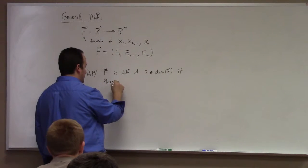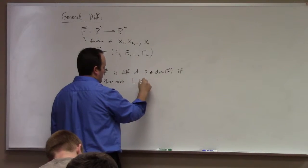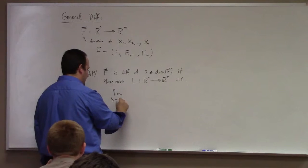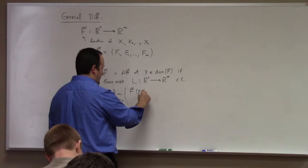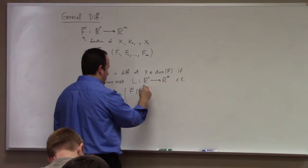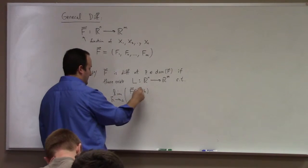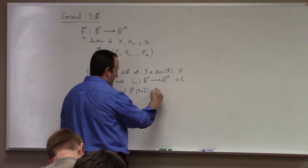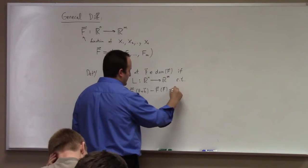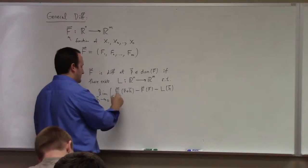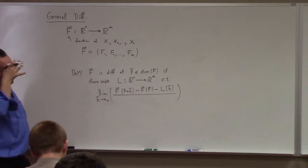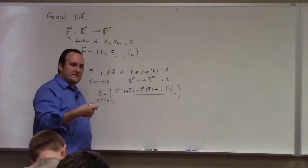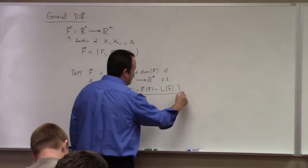If there exists some function L going from Rn to Rm such that, and here's the thing, the limit as h goes to 0 of f of p plus h, and I probably should put an h vector to emphasize that this is a vector, h vector, h vector. You could put a vector on the p if it makes you happy. Everything's vectors, vectors, vectors, all around vectors. So f of p plus h minus f of p minus L of h, all divided by... And you see, I'd like to divide by h. That would be analogous to the ordinary calculus derivative. But I can't do that because h is a vector. So instead of dividing by h, I divide by the norm, the length of h.